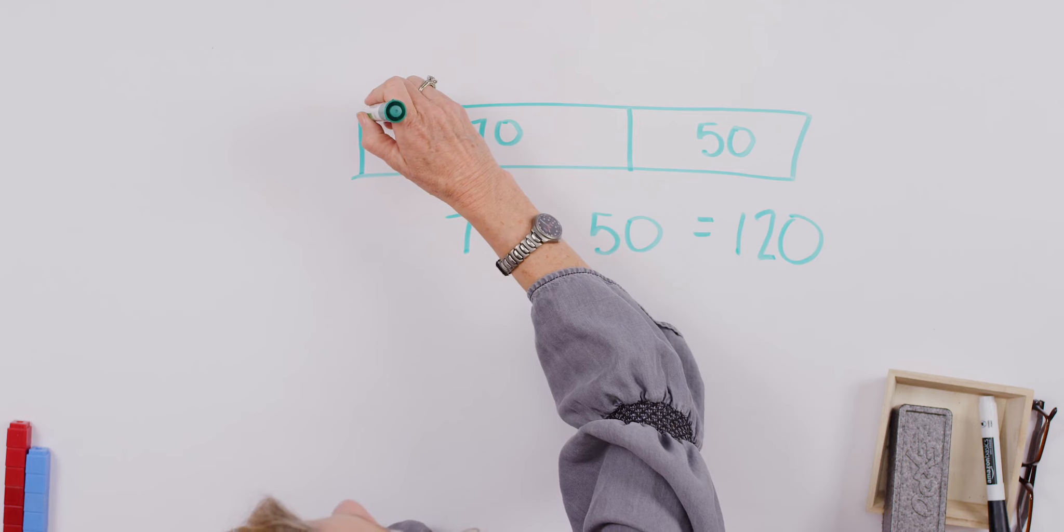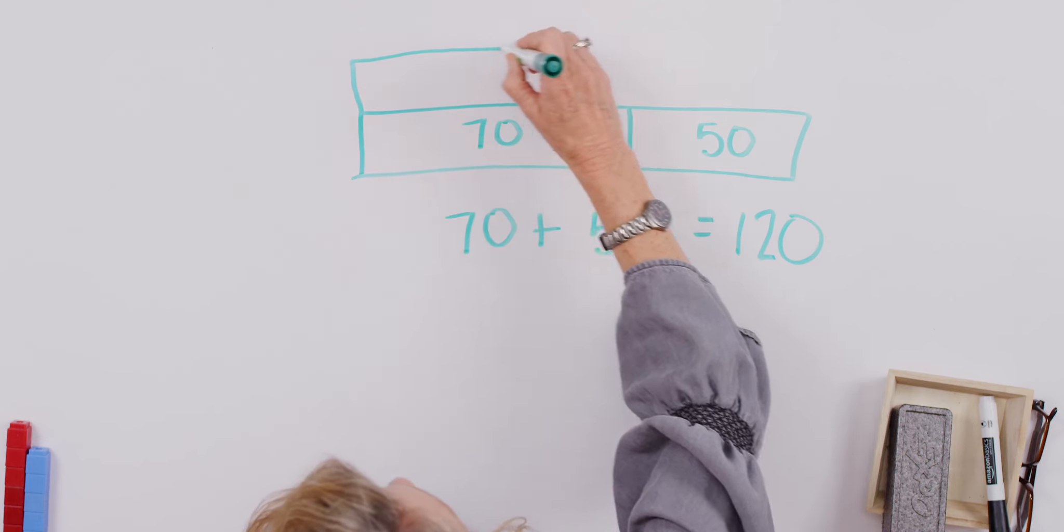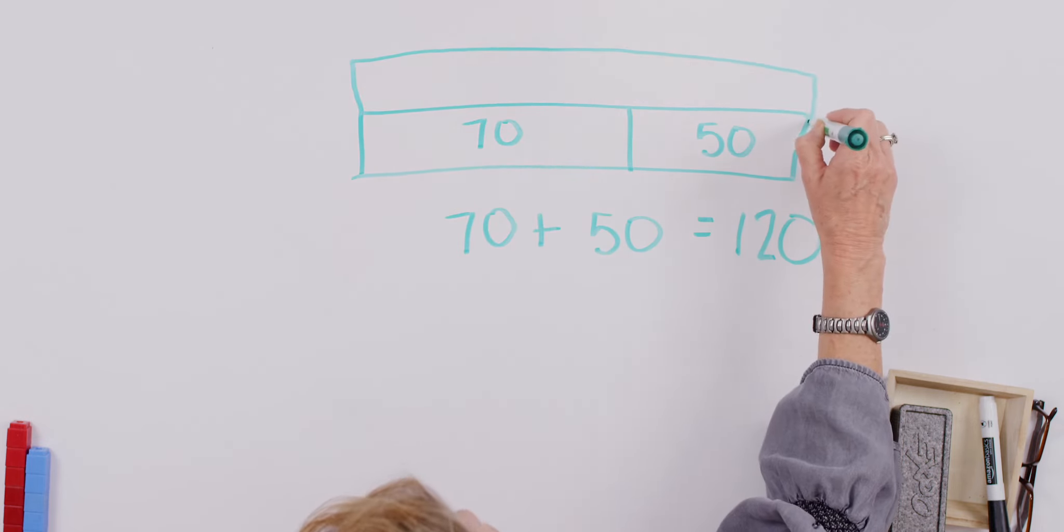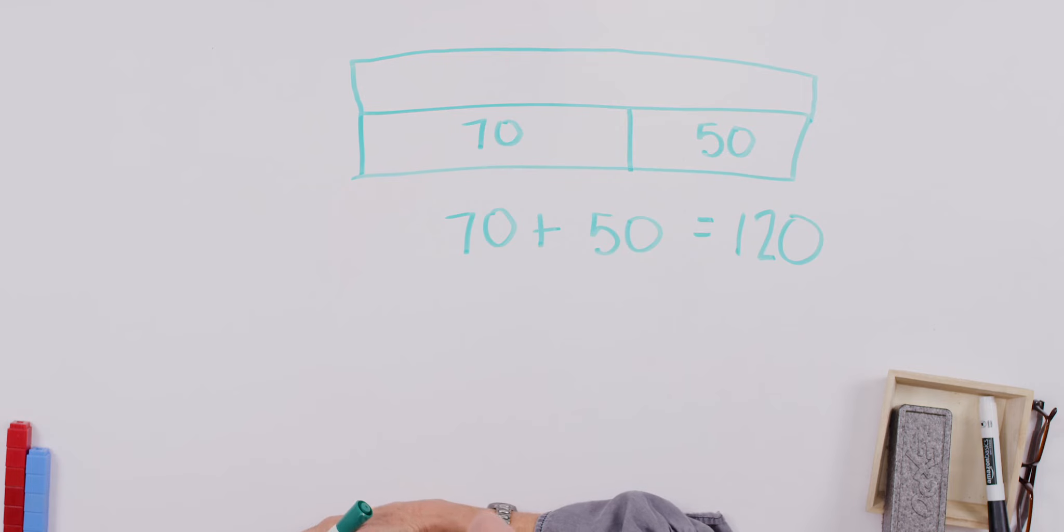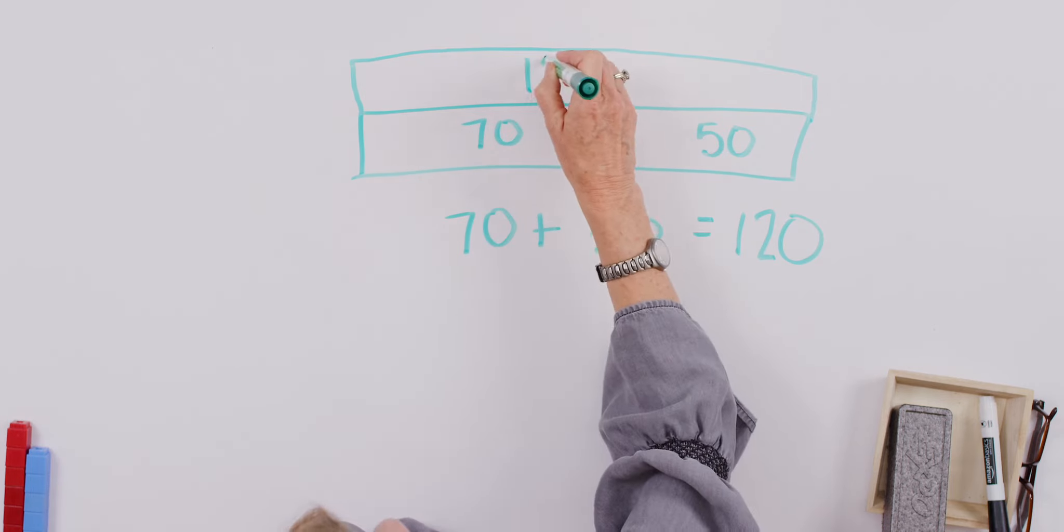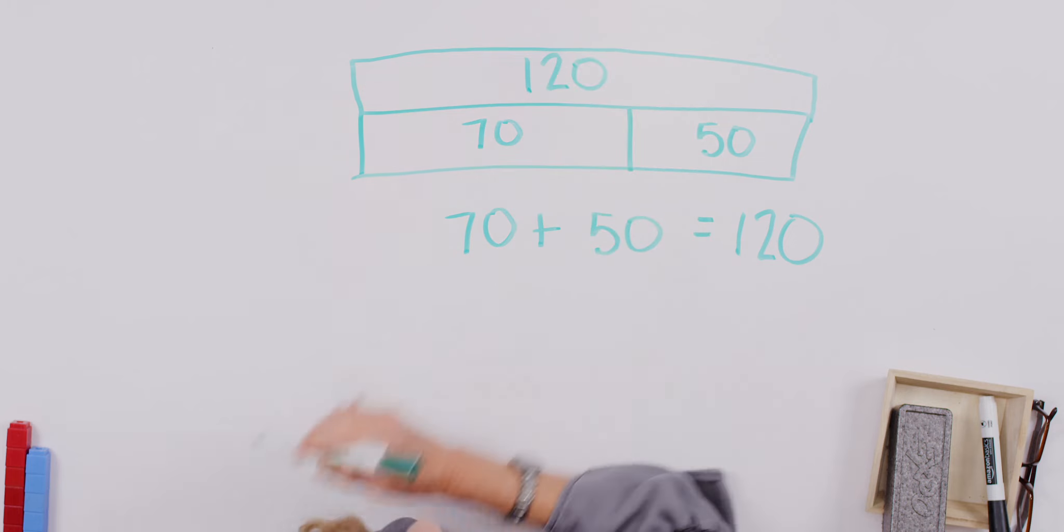And again, sometimes you might see it shown like this, where we're asking for the sum of 70 and 50. And you're going to show the whole and 70 and 50 is representative of a part.